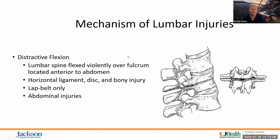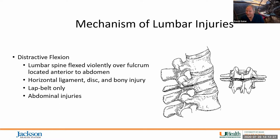A distractive flexion lumbar injury is typically when the lumbar spine is flexed violently over a fulcrum — such as a lap seat belt, especially in the back seat before shoulder straps were standard. The belt itself became the fulcrum and contributor to many lumbar spinal cord injuries, typically associated with abdominal injuries as well.